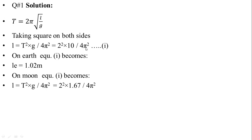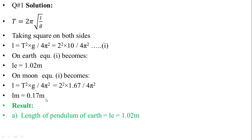Now we calculate the length on the surface of the Moon. Equation 1 becomes L equals t squared multiplied by gm upon 4π squared. Putting the value of t as 2 squared and gm as 1.67 divided by 4π squared, the length on Moon Lm is equal to 0.17 meters. Result: length of simple pendulum on Earth Le equals 1.02 meters, and length on Moon Lm equals 0.17 meters.